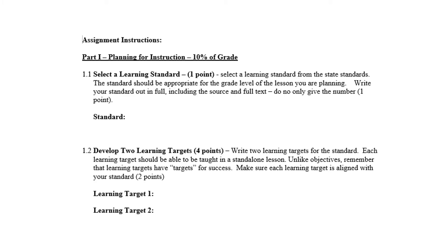Let's get into the specifics for Part 1, which is worth 10% of your grade. The first thing you will do is select a learning standard. Go into the folder on the course materials page and select a standard that you could think of a lesson for and align a couple of learning targets to. This is worth 1 out of the 10 points. When you've selected your standard, type it in full on the document. Be sure to include the standard number, the source — for example, is it a Next Generation Science Standard — as well as the full wording of the standard. Students sometimes submit standards with just the words and not the number or source; for full credit, include all three.